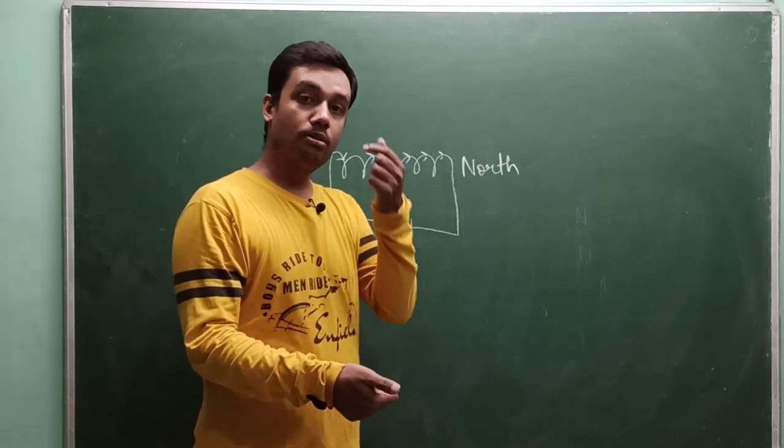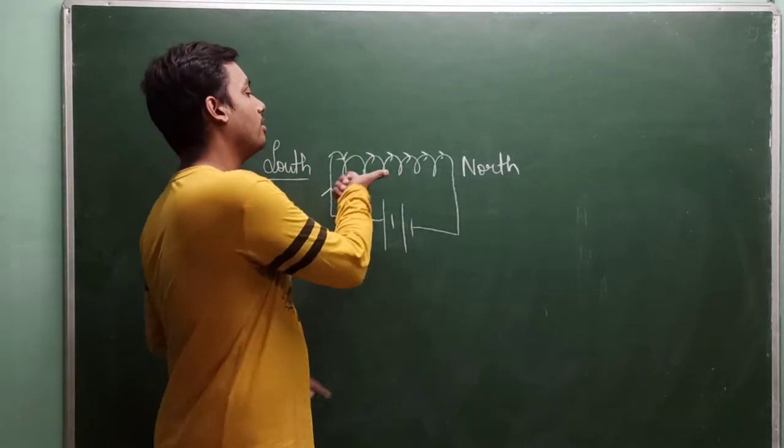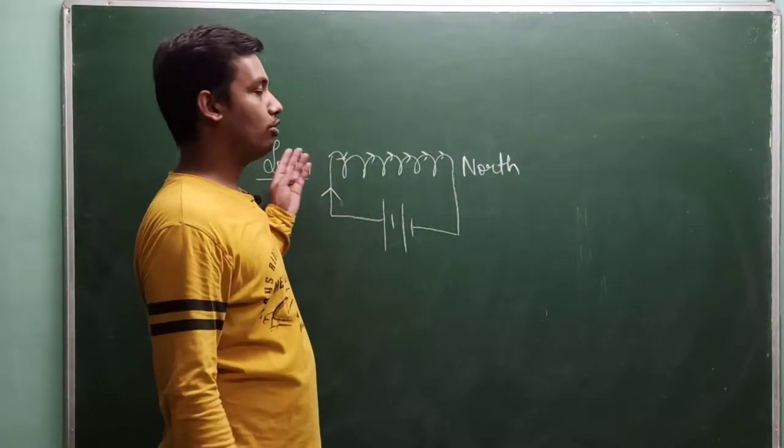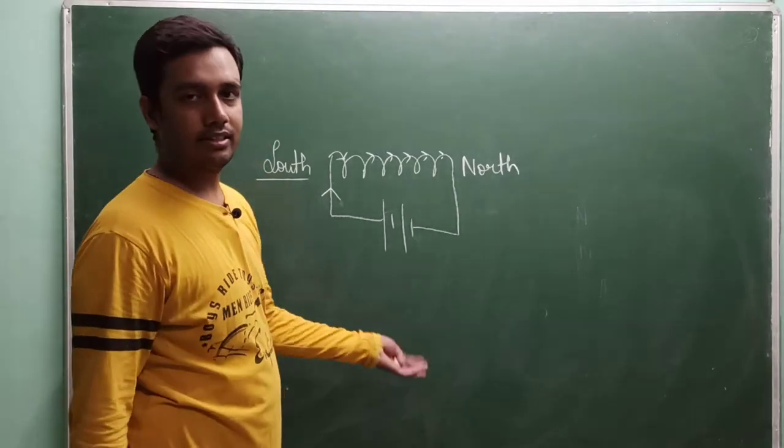Hold the solenoid. Wherever the current is going is north pole, and the opposite pole is south pole. I hope it is clear to you.